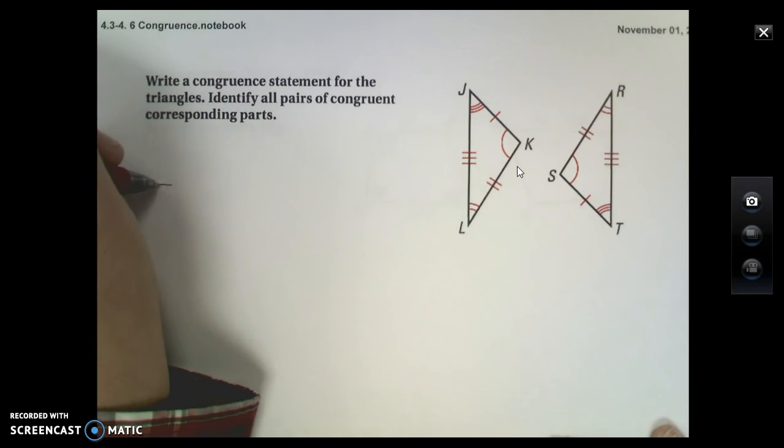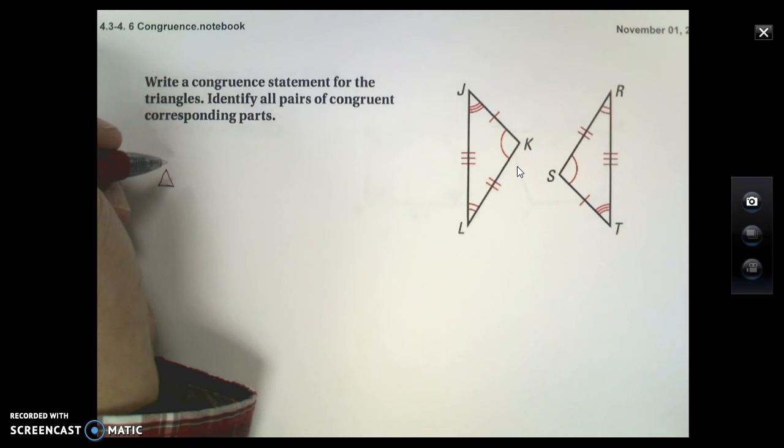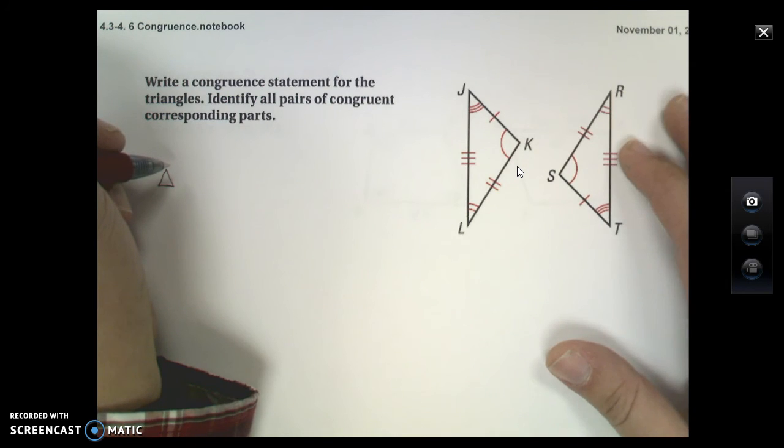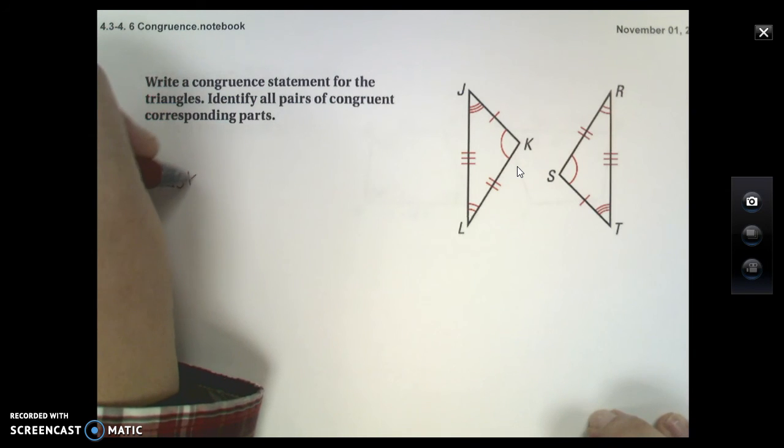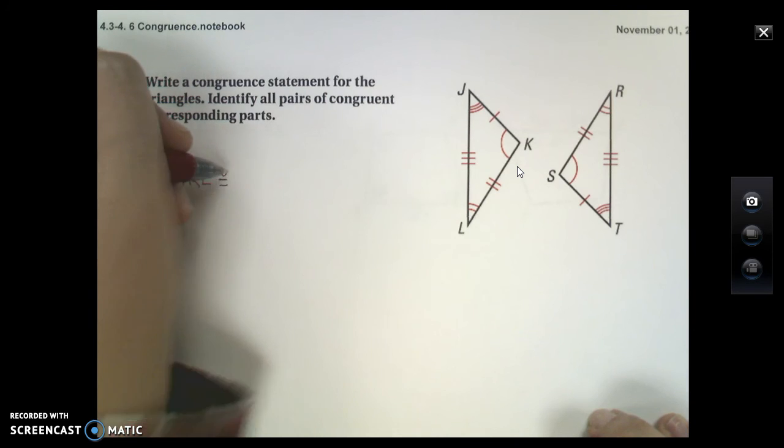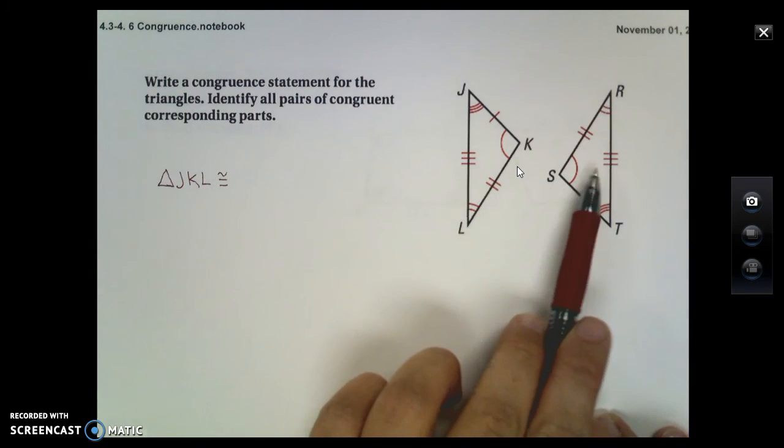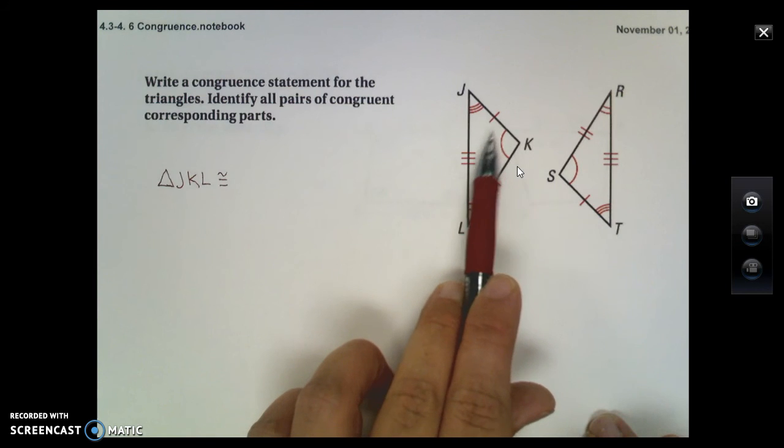So let's talk through one of these, and then I'll list out some of the other possibilities. So let's say I want to go in alphabetical order. So let's go J, K, L on the left side. I'll write my congruent symbol. So now I want to write the triangle that corresponds to J, K, and L.